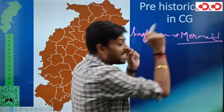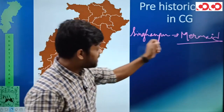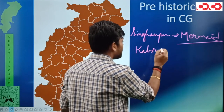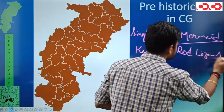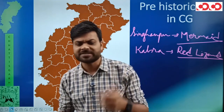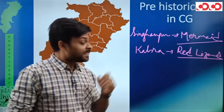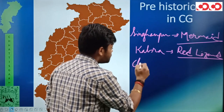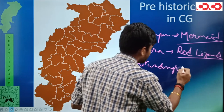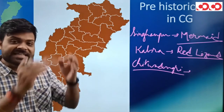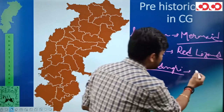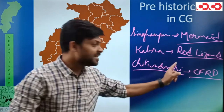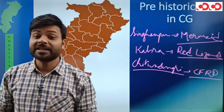For example, Singhanpur में हमें मिली है एक mermaid का form — inscription में देखने से ऐसा लगता है कि it is a picture of a mermaid। उसके बाद Kabra Hill — वहाँ पे red lizard का form देखने को मिलता है, जिसका color है orange-ish red, जिसे हिंदी में 'geiru' कहते हैं। इसके बाद Chitwa Dongri — यहाँ एक Chinese figure मिला है जो donkey पर ride कर रहा है। इसके अलावा यहाँ पे एक dragon का form भी देखने को मिलता है।